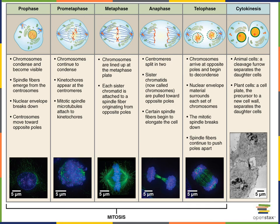A cleavage furrow forms as proteins start to pinch off the plasma membrane, and eventually they pinch all the way through, forming two separate cells each with their own cytoplasm containing their own set of organelles, including a nucleus with a complete set of genetic instructions.